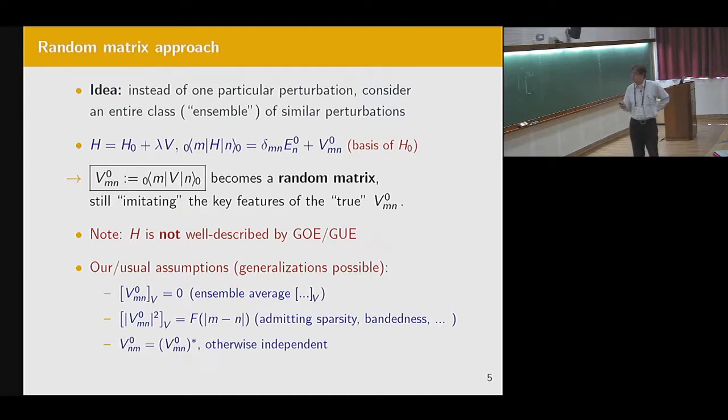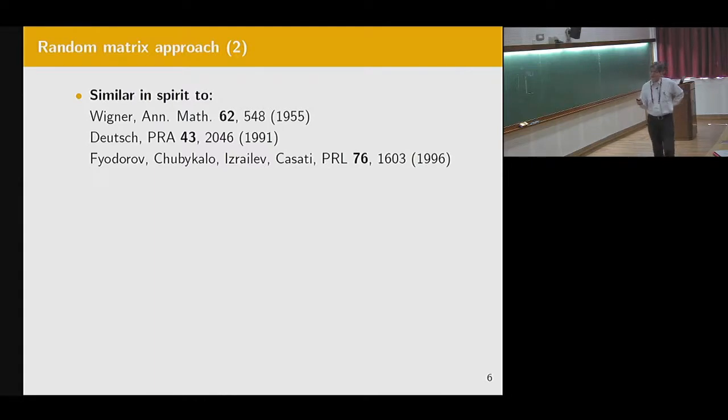So in spirit, all this is similar to the original work by Eugene Wigner. Initially, he considered this kind of random matrices. Only later, he switched to the much more simpler BOE and GUE. And Josh Deutsch, in this groundbreaking paper, essentially considered exactly the same situation. But he focused on the long time limit. And I generalize this essentially to all times, including the relaxation before the long time limit is reached. And the matrix, the random matrix approach is similar but substantially generalizes this one here.